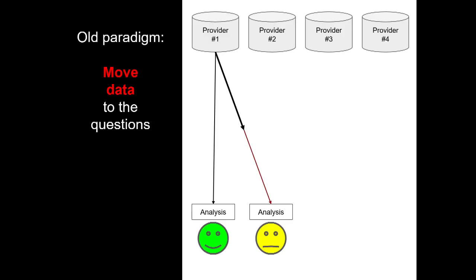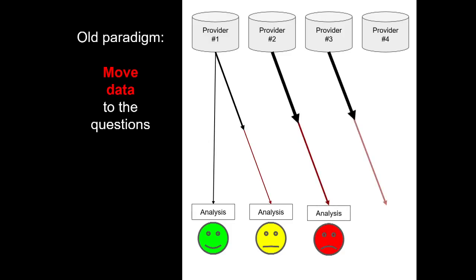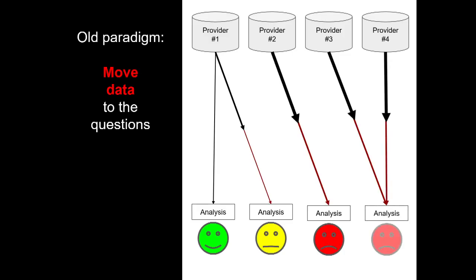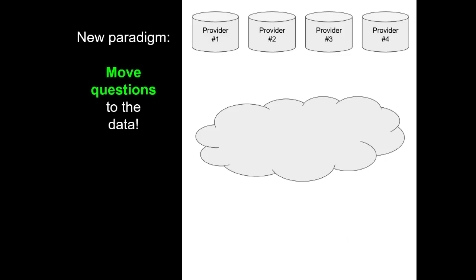As you move to larger datasets going across time or space you start getting a little bit sad. If you start trying to pull multiple datasets from multiple data providers you get even less happy. You're basically limited by the internet pipes and bandwidth, not the creativity of the user. Just getting data can be most of your time. The new paradigm is moving the questions to the data rather than the other way around, and the cloud enables this.